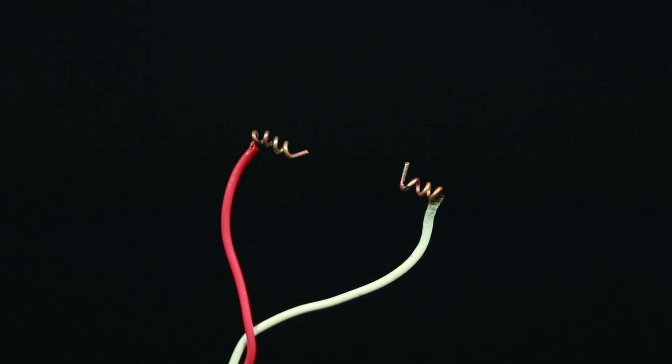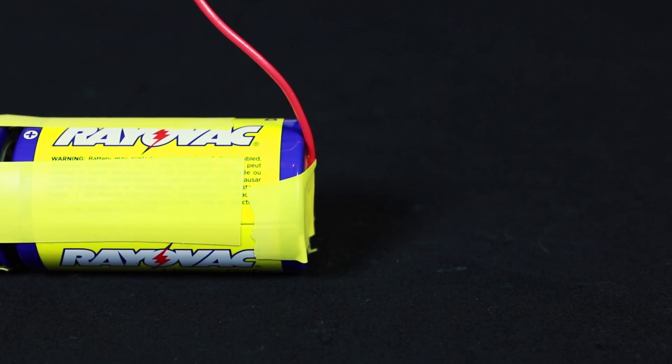Next, take a piece of wire and spiral the ends just large enough to fit a piece of 0.7 millimeter mechanical pencil lead. Tape down the other end of one of the wires to the negative terminal of the batteries.